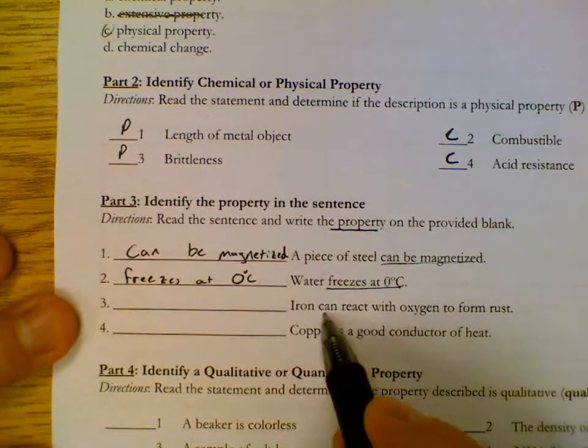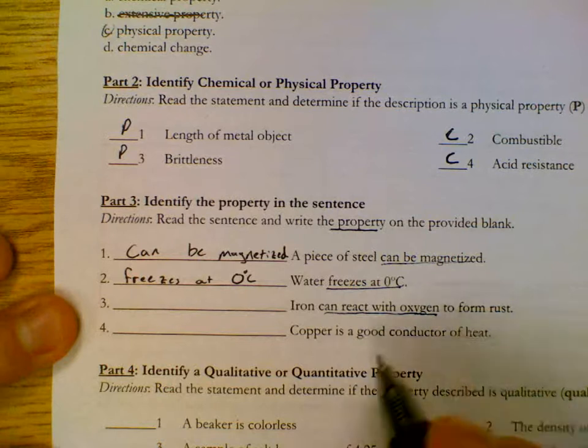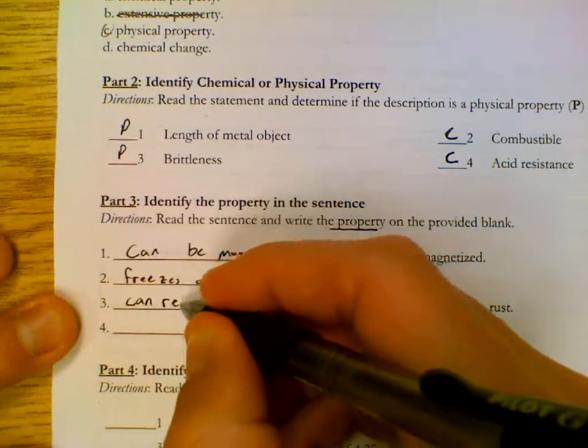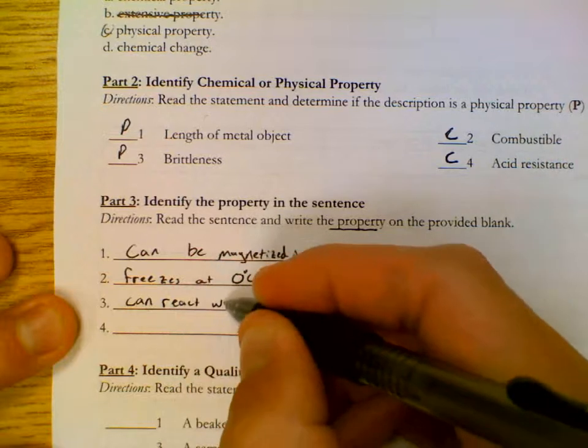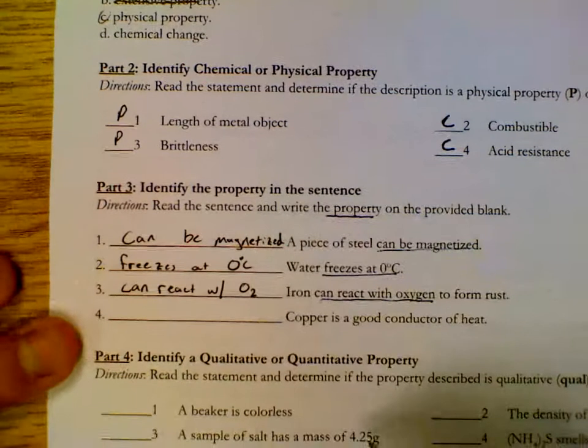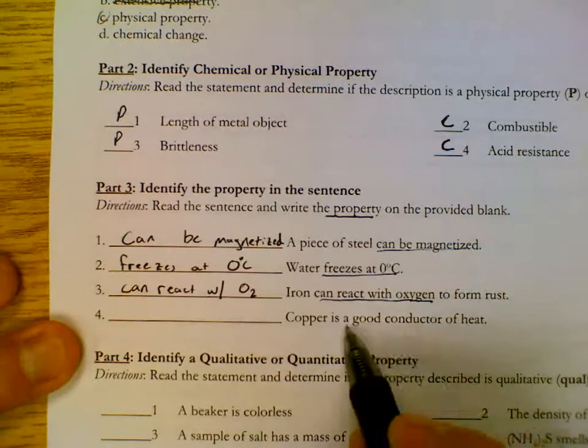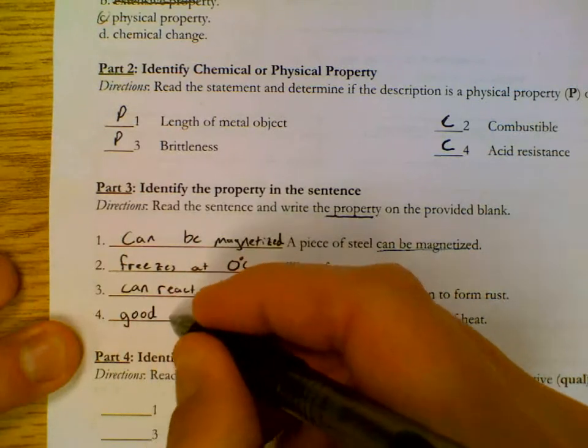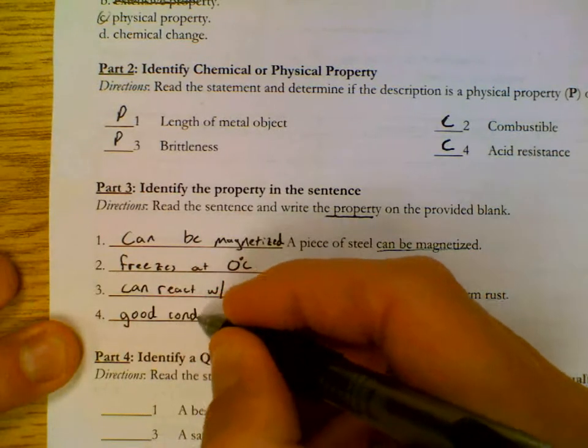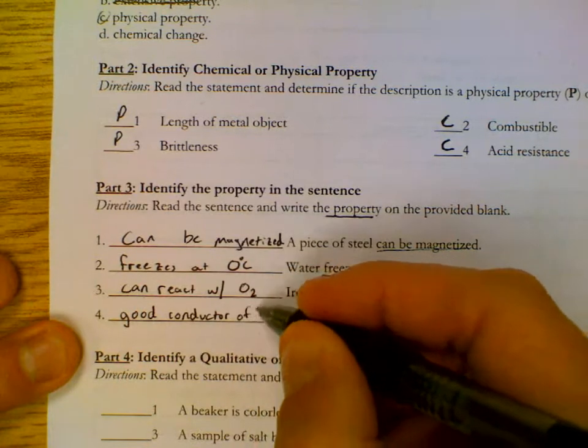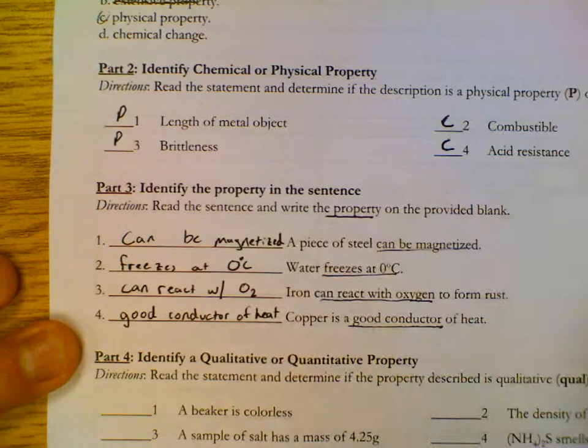Iron can react with oxygen to form rust. So can react with oxygen is our property. Copper is a good conductor of heat. Good conductor of heat is the property.